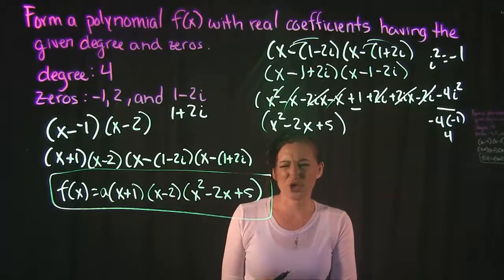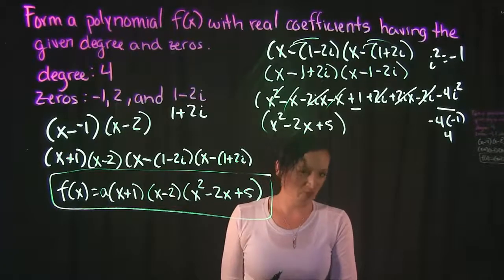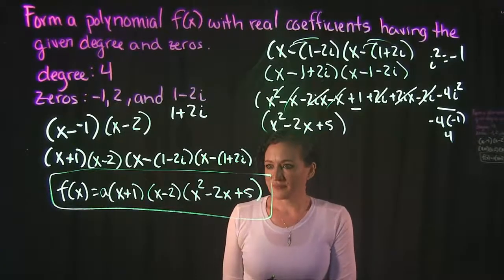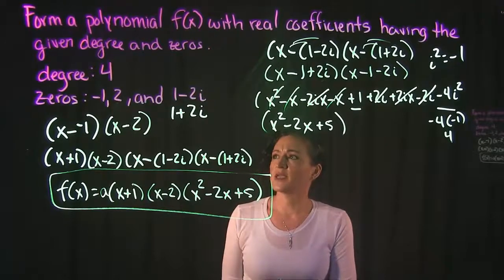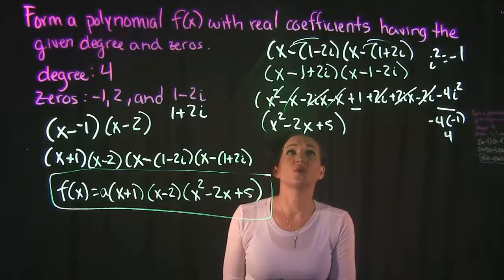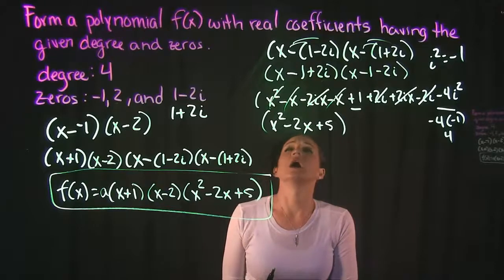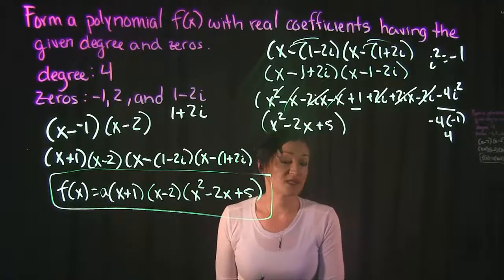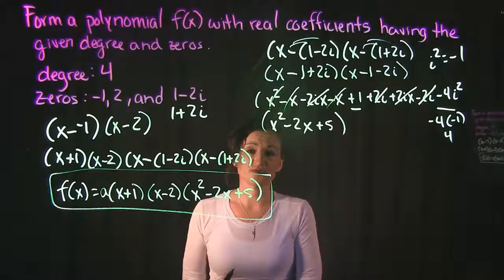Though technically we could plug in a 1 for that if we wanted to. It's not a big part of this problem here. But this is a polynomial with real coefficients with the given degree and the zeros that they gave us. That's it for this video.